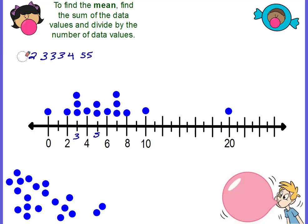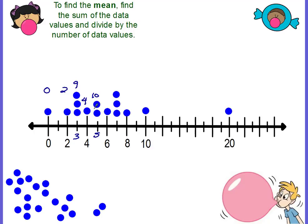There's a shortcut way of doing this. There's one zero, so the total is just zero. There's one two, so the total is two. There are three threes — each one represents a three — so three, six, nine. There's one four. Two fives make ten — each one of these is five, they add up to ten.